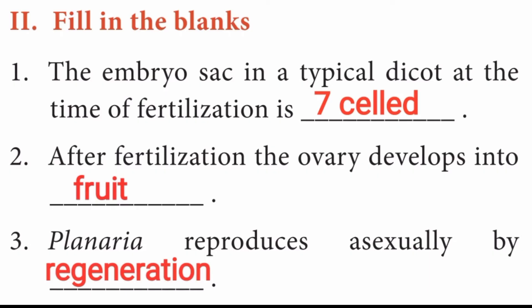Second section: fill in the blanks. First question: the embryo sac in a typical dicot at the time of fertilization has dash. Answer is 7 cells. Second question: after fertilization, the ovary develops into dash. Answer is fruit. The zygote develops into a fruit.